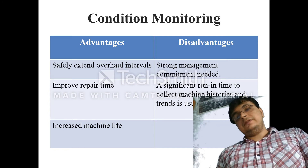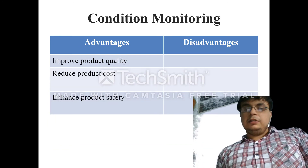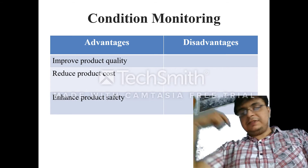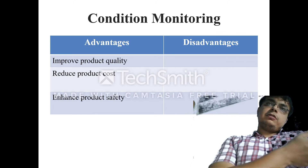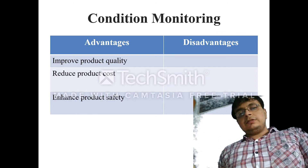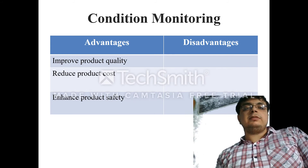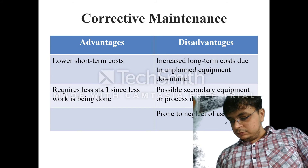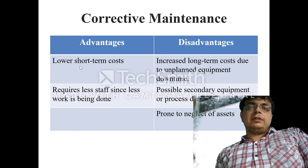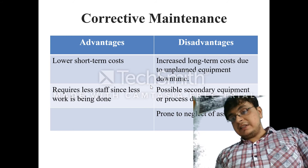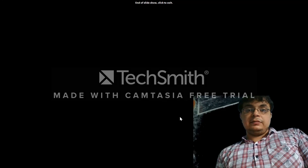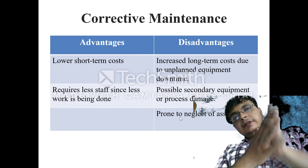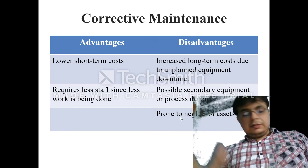Condition monitoring also increases machine life, improves product quality, reduces product cost, and enhances product safety. It is helpful to the quality, cost, and safety of the product, to the worker, and to the customers. Corrective maintenance has short-term costs, requires less labor, but has disadvantages including unplanned equipment needs and being prone to neglecting assets. Thanks for attending the session — see you in the next session.